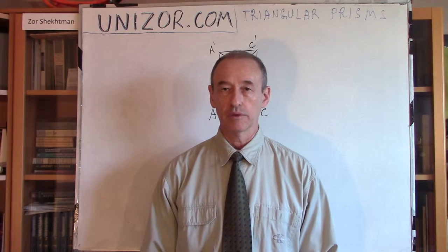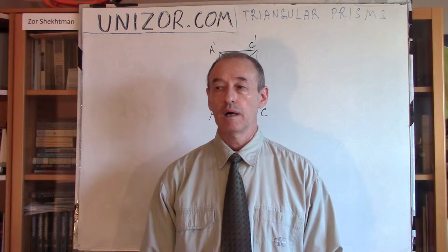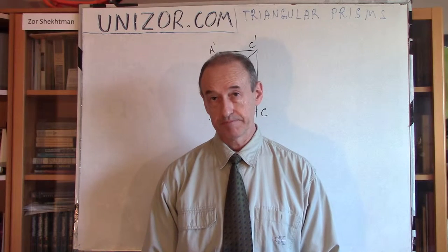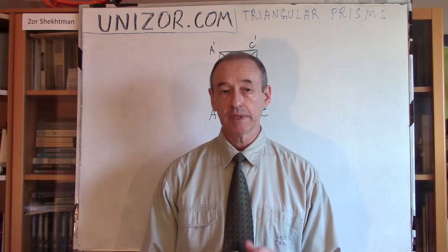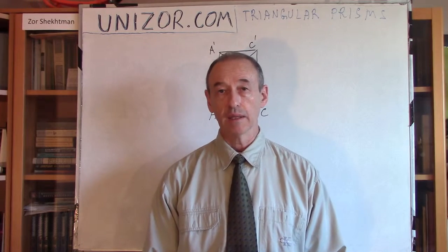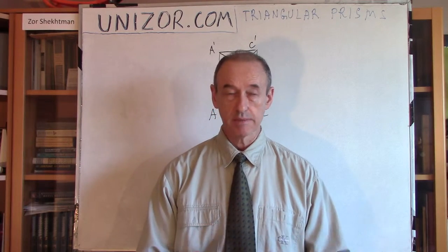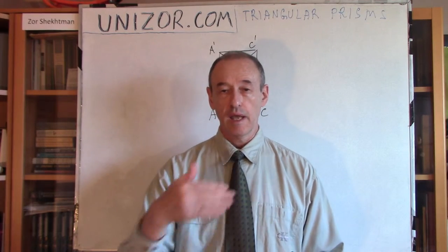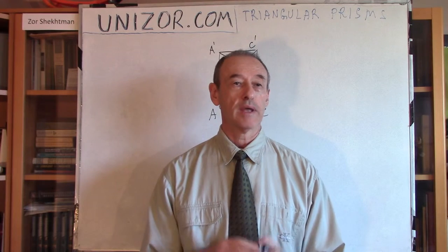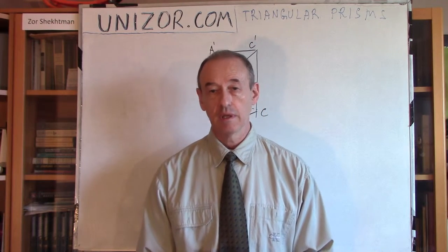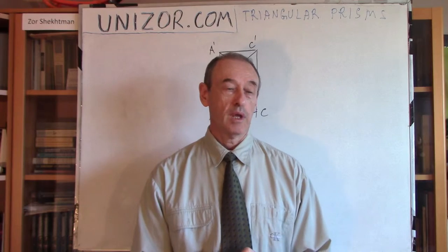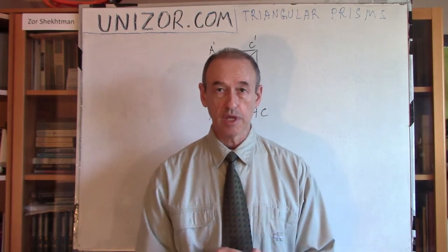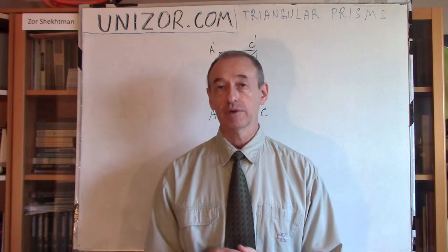We have learned a lot about prisms when we talked about parallelopipids. If you remember, a parallelopipid is a prism with a parallelogram as a base, which means the second base is also the same parallelogram, and every side face is also a parallelogram. Then we were calculating the volume of this object. I would like to continue talking about other prisms, in particular today's triangular prism and about its volume.